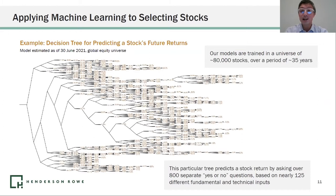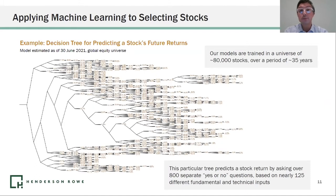A stock starts at the left of this chart, and through a series of questions that we ask about the stock, we work ourselves down to one of these so-called root nodes in the tree, where we have a prediction about the stock's return over the next month. These models are built by teams of quantitative researchers who select the methodology.